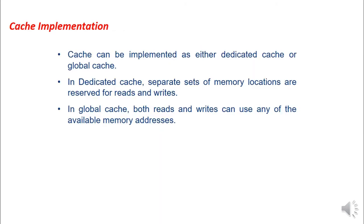Cache can be implemented as either dedicated cache or global cache. In dedicated cache, separate sets of memory locations are reserved for reads and writes — the cache is divided into two parts. In global cache, both reads and writes can use any of the available memory addresses.